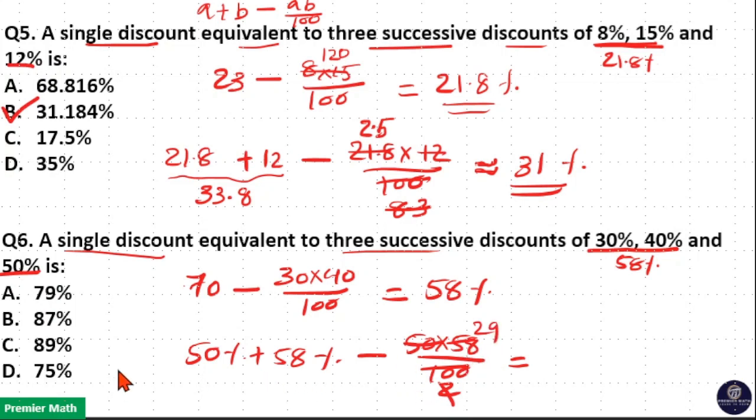Now you can see 58% minus 29% is 29%. So this is 50 plus 29, 79%. So this is 79%. Option A is your answer.